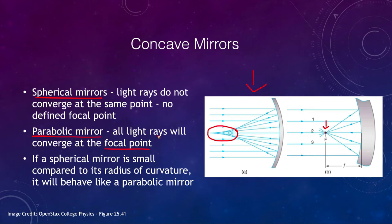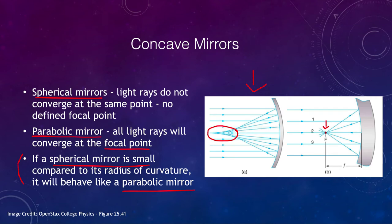However, spherical mirrors are also commonly used because a spherical mirror is much easier to make than a parabolic mirror. The shape of a sphere is very easy to grind, and if the spherical mirror is small compared to its radius, it will behave like a parabolic mirror. So for relatively small spherical mirrors, where the radius is much larger than the mirror itself, it will essentially act like a parabolic mirror, giving you a specific focal point.